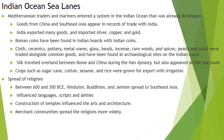Silk is traveling both overland and through these water sea lanes. Goods like sugarcane, cotton, sesame, and rice are being grown in India and exported as a way to make ends meet. An important idea for the Indian Ocean sea lanes is the spread of religion: between 600 and 300 BCE, there is a massive rise in the spreading of three different religions — Hinduism, Buddhism, and Jainism — all going to spread to southeast Asia.